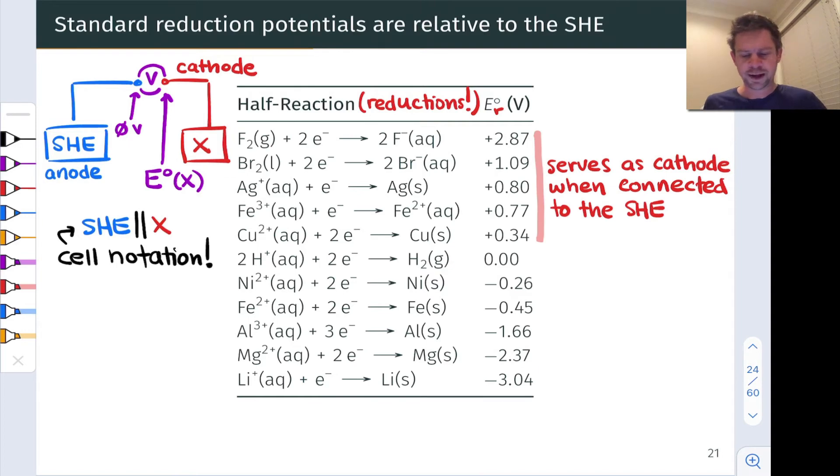So to return to the relationship to the SHE for a second, these potentials that are positive correspond to half reactions that occur spontaneously in the reduction direction when this half cell is connected to the SHE. And so when I connect a half cell, for example, containing silver plus cation and silver metal up with the SHE, the reduction of silver plus occurs spontaneously to produce silver metal. This is kind of neat. All you need to produce silver metal from silver plus cation is a little bit of hydrogen gas in the SHE. And likewise for all of the other positive potentials. All of these reduction reactions occur spontaneously when the SHE is connected up to each of these half cells under standard conditions.